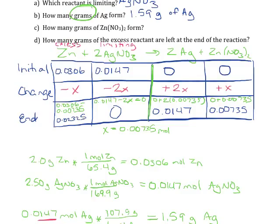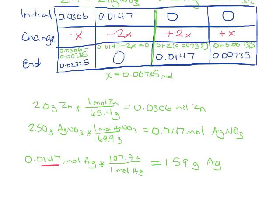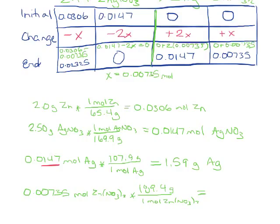The next question is asking me for grams of the zinc nitrate, another one of my products. Again, this number is in moles, so I need to do one extra calculation to change my moles into grams. Starting with my 0.00735 moles of zinc nitrate, using the periodic table you should find that one mole of zinc nitrate has a mass of 189.4 grams. Doing the math gives a final answer, to three significant figures, of 1.39 grams of zinc nitrate.